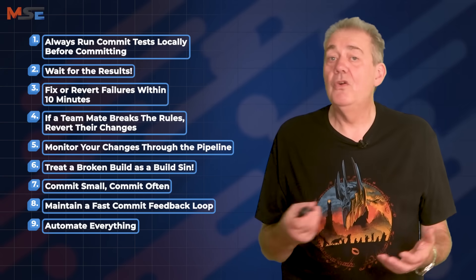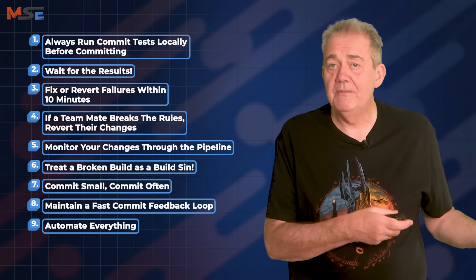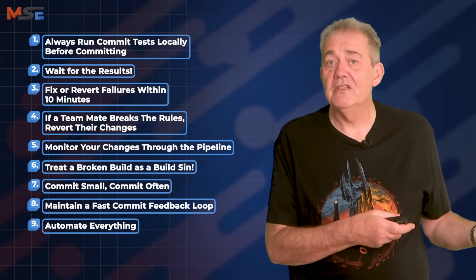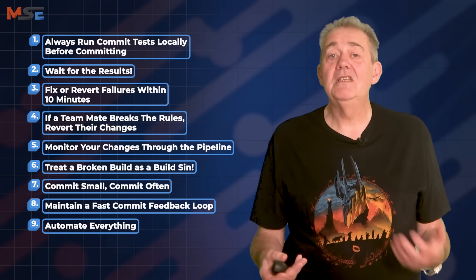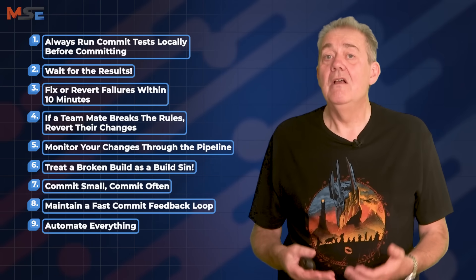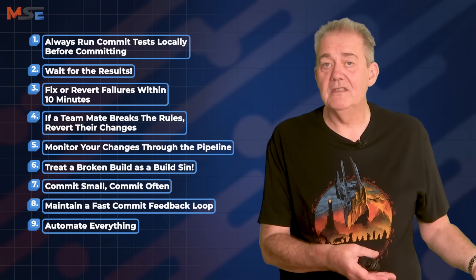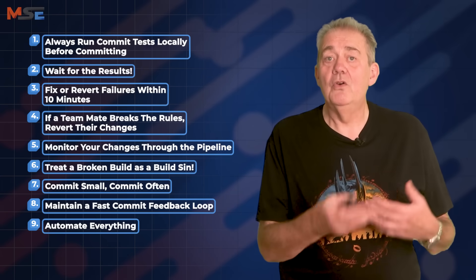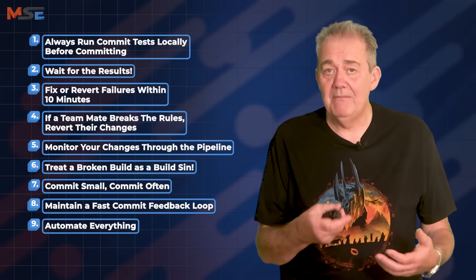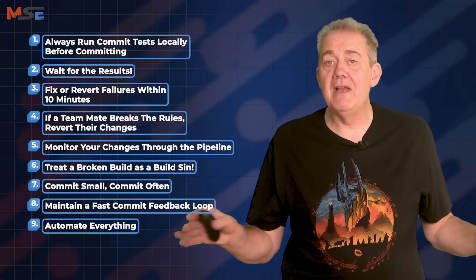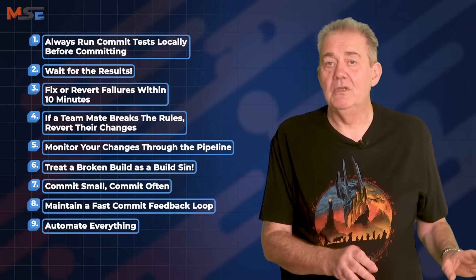Rule nine: automate everything. From running tests to deploying changes, automation is your best friend. Continuous integration relies on fast, reliable, repeatable processes. Automate testing, configuration management, deployments and build creation to remove manual errors and keep things consistent and repeatable.